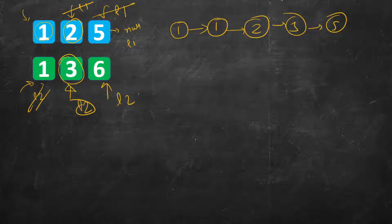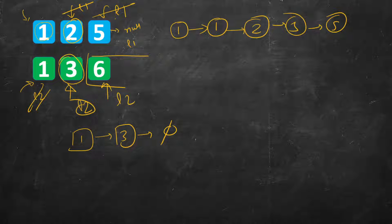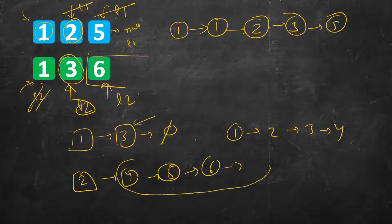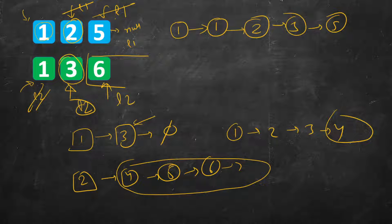Whenever any of these become null we append the remaining list. For example, if we had 1, 3, null and then 2, 4, 5, 6, we would have inserted 1, 2, 3 and now the first one becomes null so we append everything from 4 onwards. We don't have to iterate unnecessarily because there is just one list remaining.